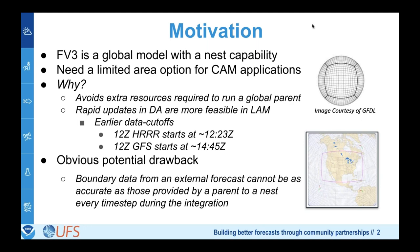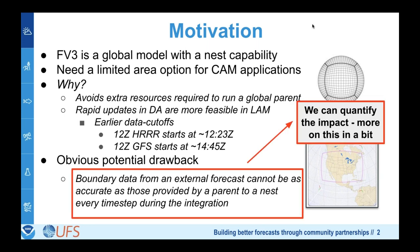There's a potential drawback: boundary data from an external forecast can't be as accurate as those from a parent nest updated every time step, and we also miss two-way feedback. Fortunately, under the UFS framework and FV3, we have a global with-nest capability and now limited area capability, so we can quantify the impact of this kind of configuration.